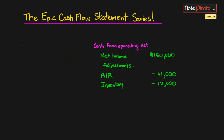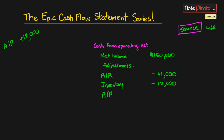We've already adjusted for accounts receivable and inventory, and now we need to adjust for accounts payable. Accounts payable went up by $18,000, and we need to decide whether it's a source or a use. By our rule, it's a source because accounts payable is a current liability, and when current liabilities go up, it's a source of cash.